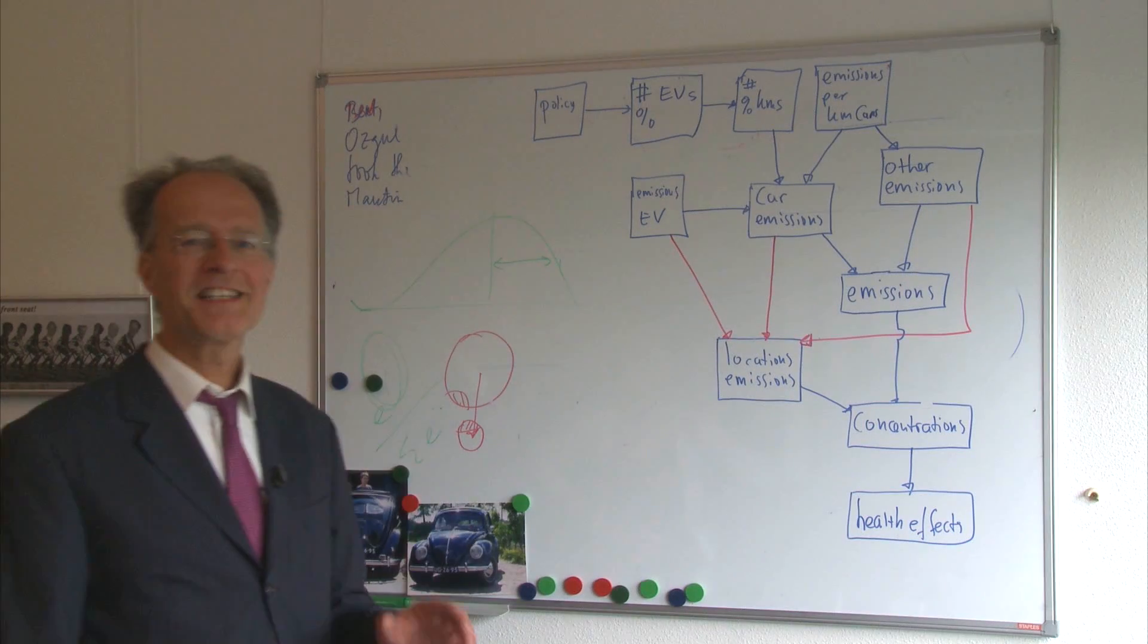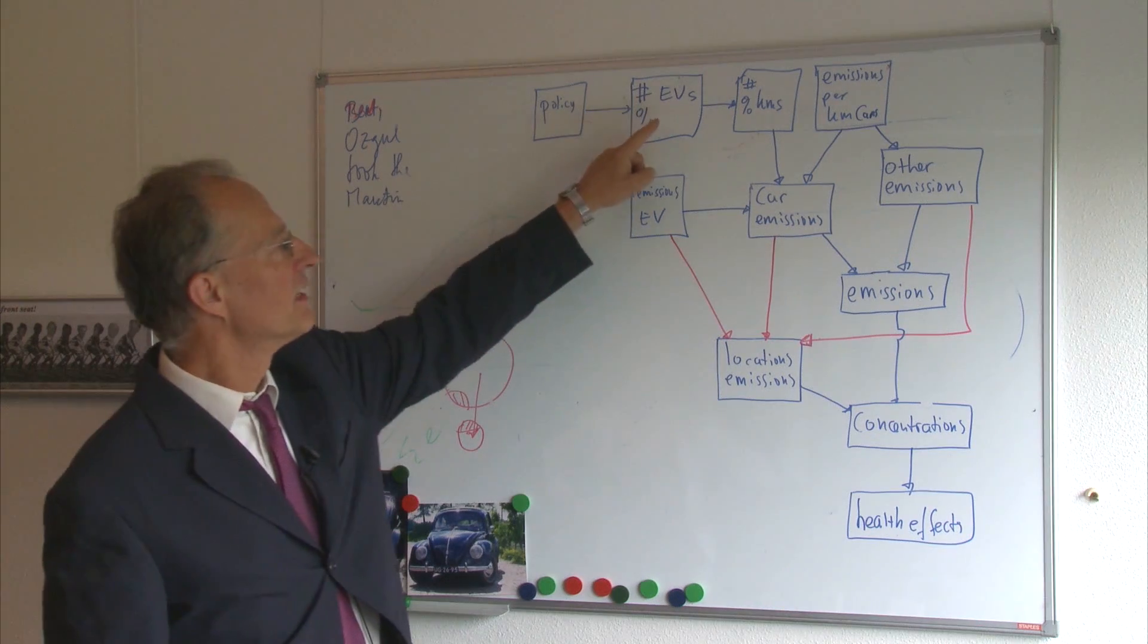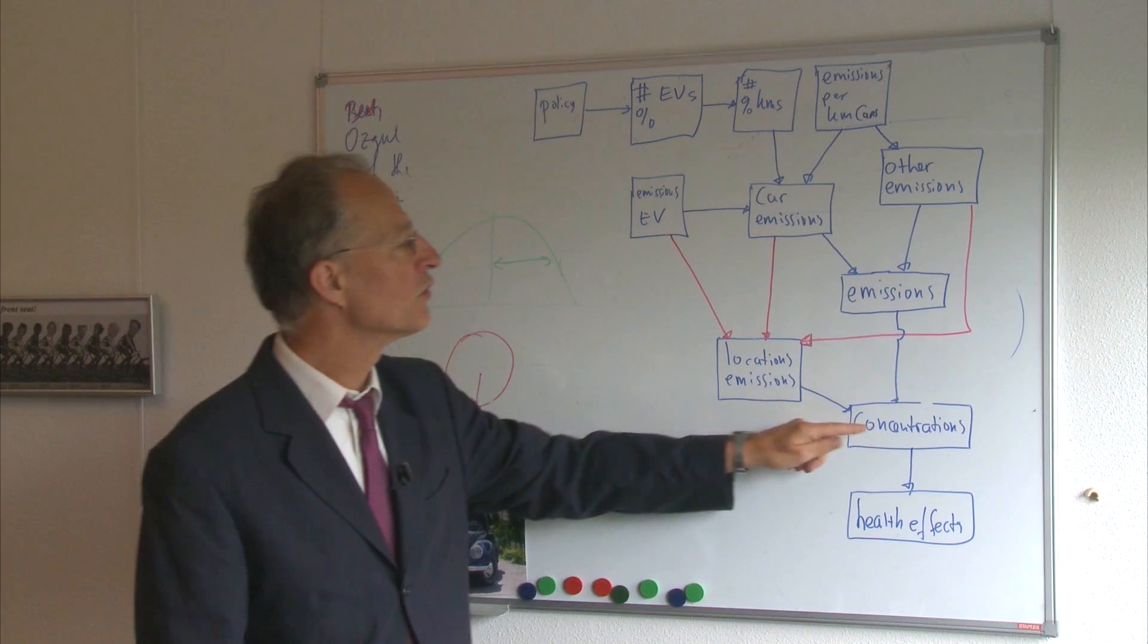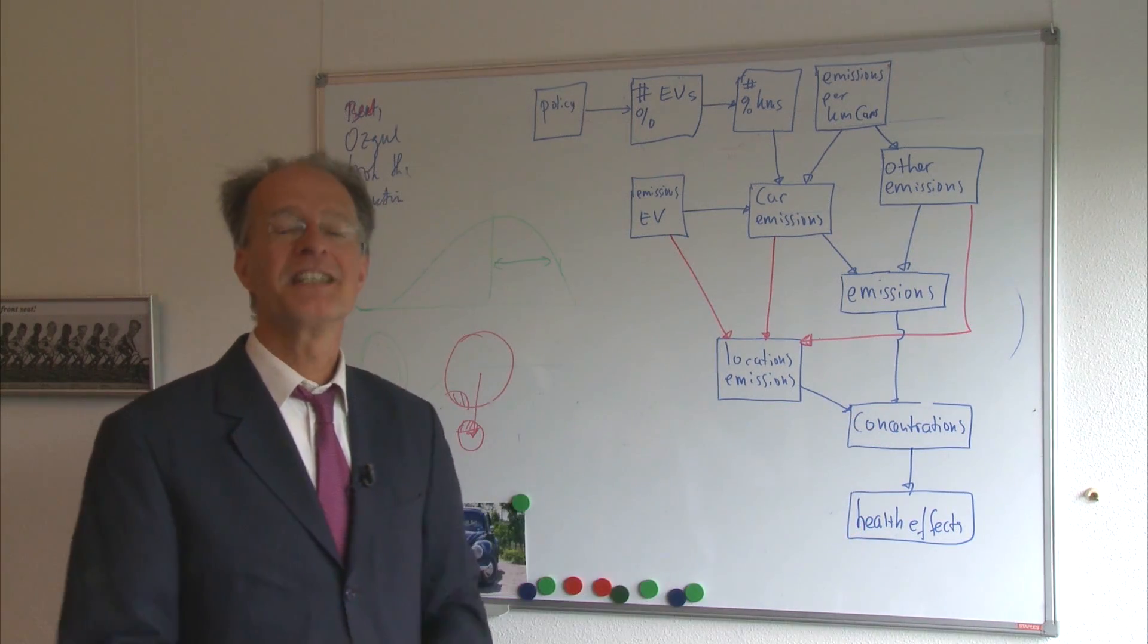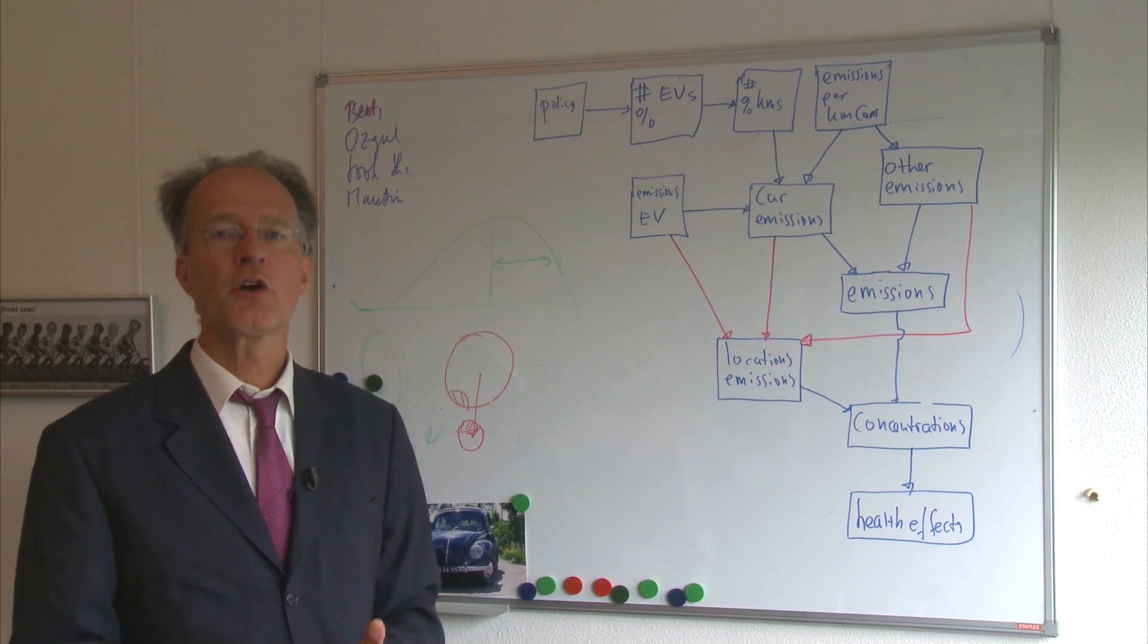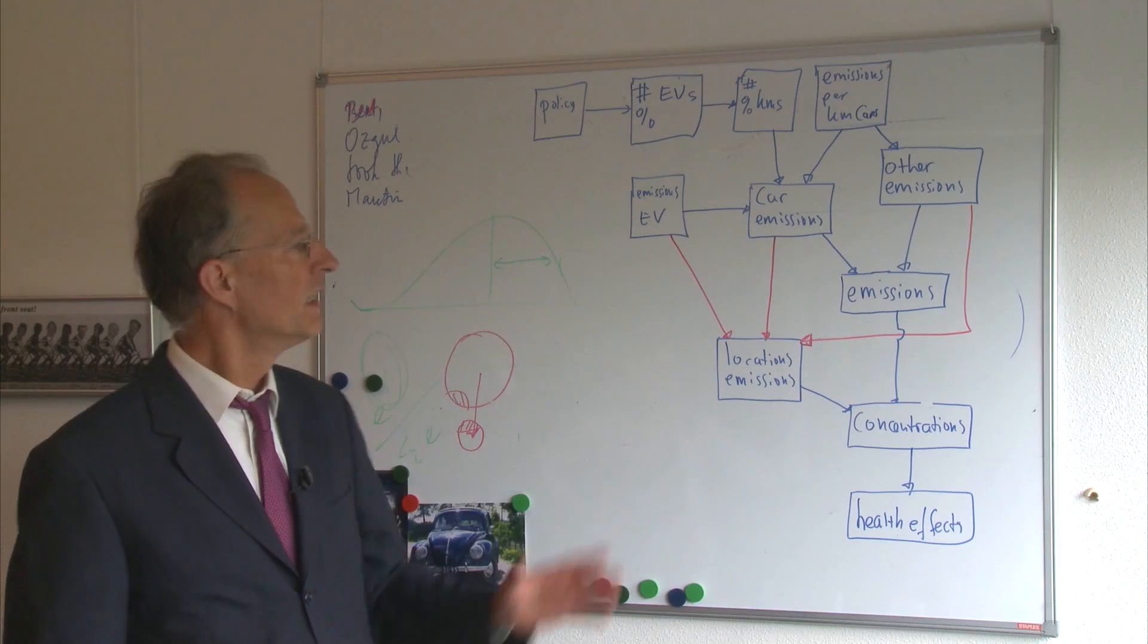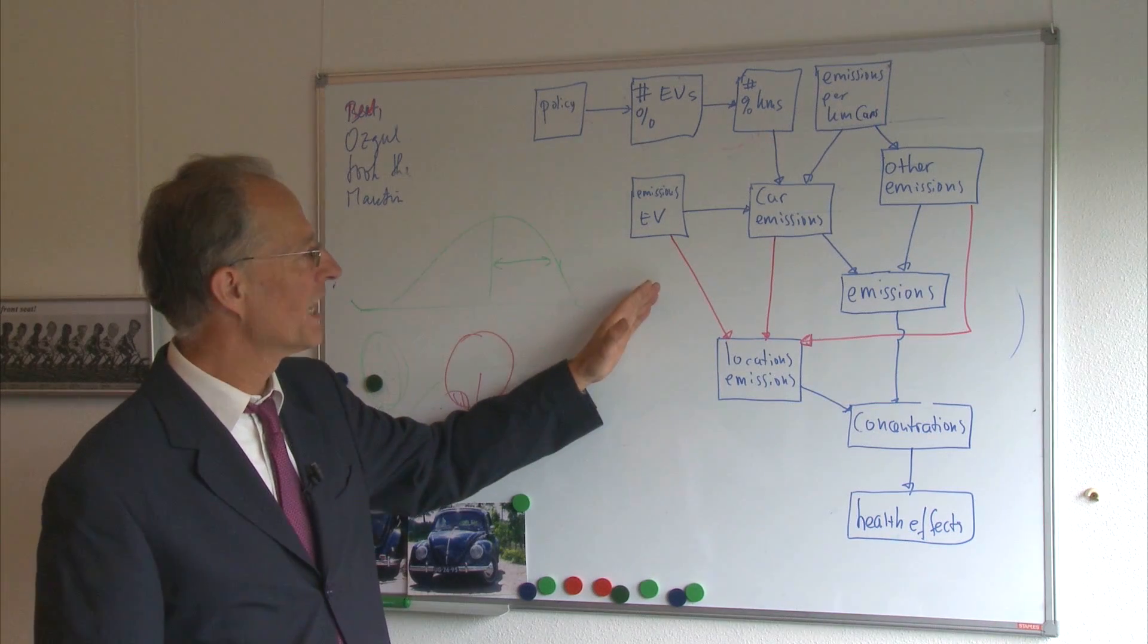Suppose you want to estimate the impact of policies to stimulate people purchasing and using electric vehicles on the concentrations of pollutants and next to health effects. This is well doable as long as you split up the whole problem, which is way too complex for one model, in separate pieces of a jigsaw puzzle, which is conceptualized in this diagram.